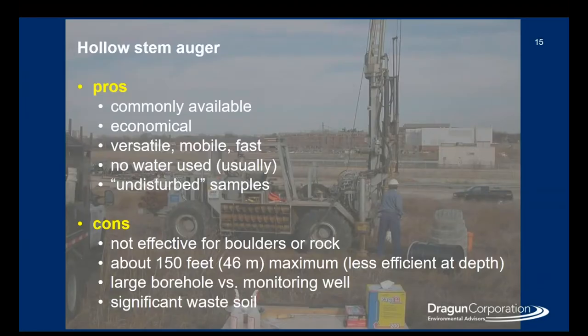Some of the pros and cons for the hollow stem auger: the pros are that they're commonly available, economical, versatile, mobile, and fast. Generally, there's no water introduced during the drilling, and you come up with undisturbed samples. The cons are that they're not really effective on boulders or rocks. You can get to about a hundred feet in depth as a maximum, and if you're sampling, it becomes less efficient at depth. You end up with a large borehole versus your monitoring well, and there's significant waste of soil with the cuttings.